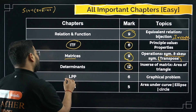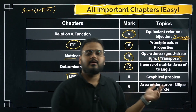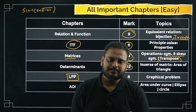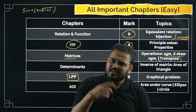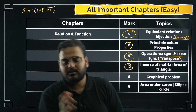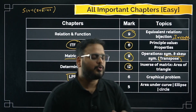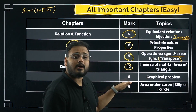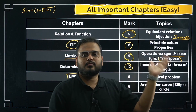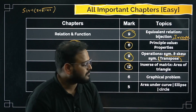LPP — Linear Programming Problems — the simplest chapter, 6 marks worth. A graphical question is asked: they give you an objective function directly or via a word problem where you define variables and express the objective function as a linear expression, then maximize or minimize it — basically optimization. Usually one 6-mark graphical problem is asked; sometimes MCQs come as well.